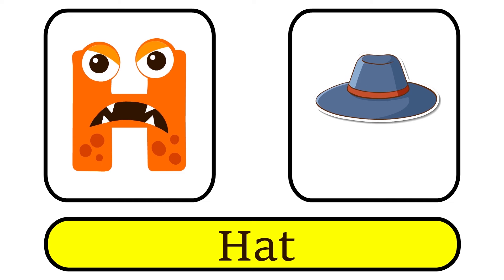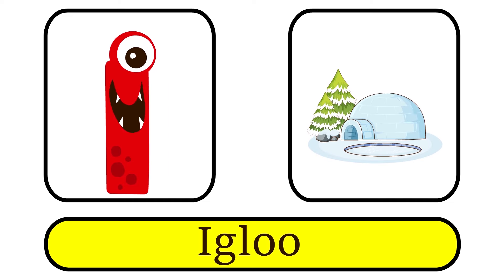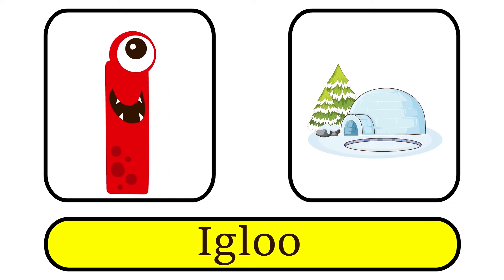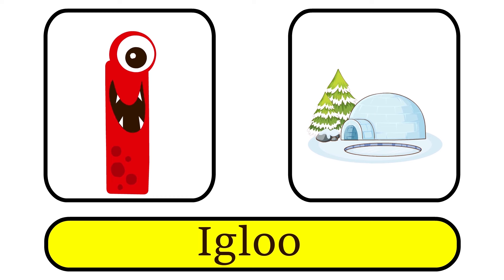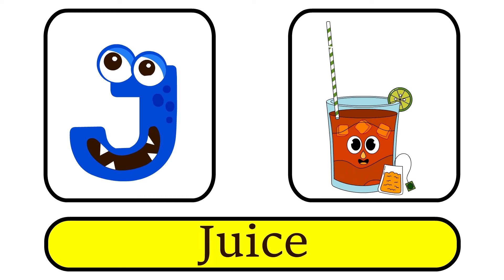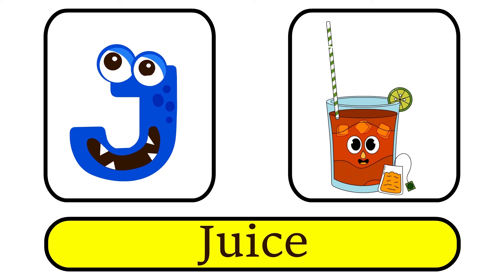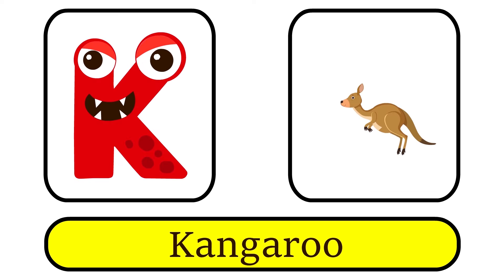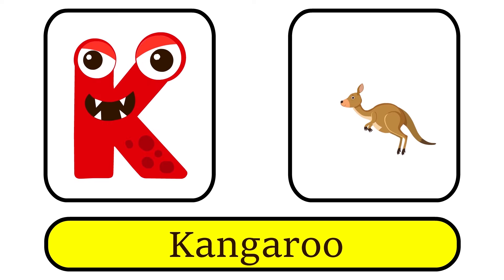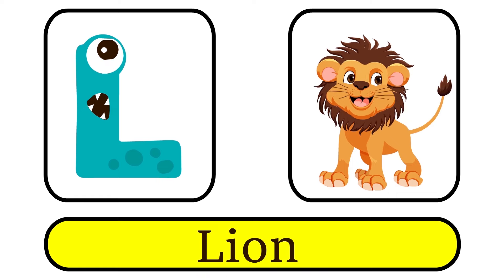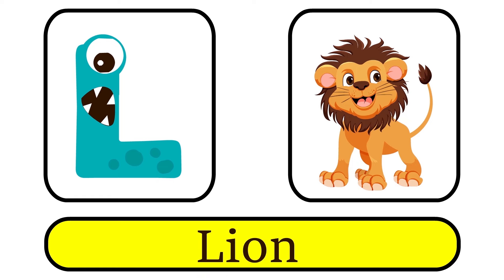I is for Igloo. E, E. J is for Juice. J, J. K is for Kangaroo. G, G.